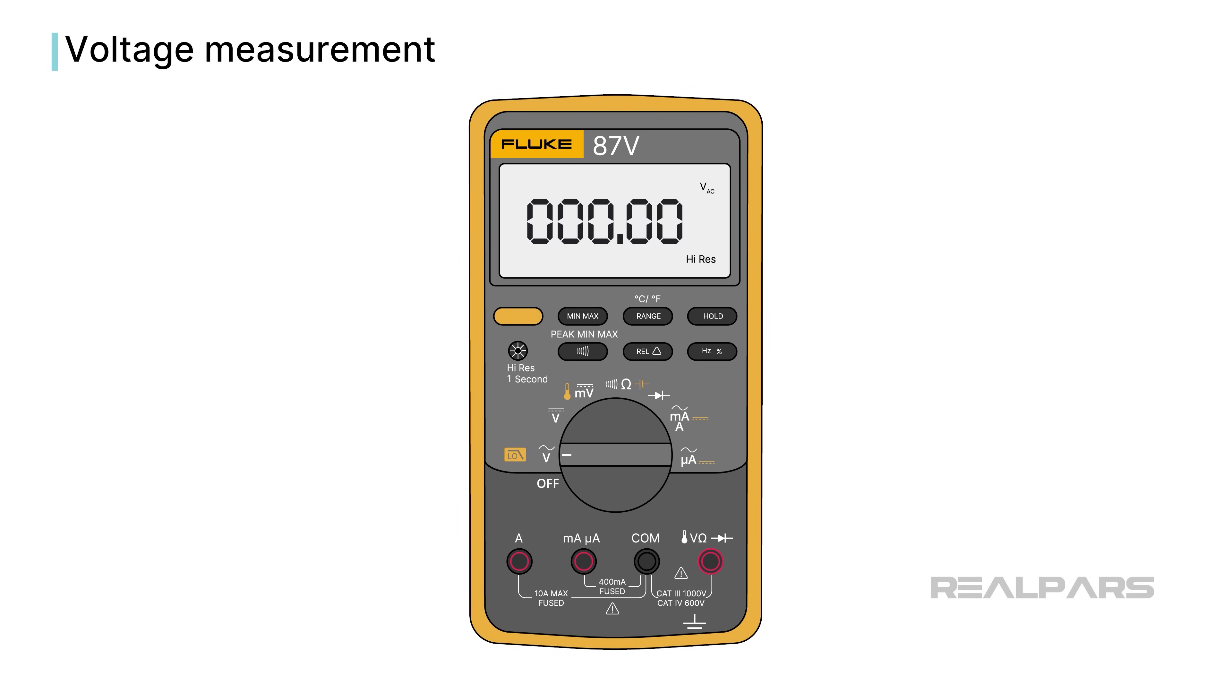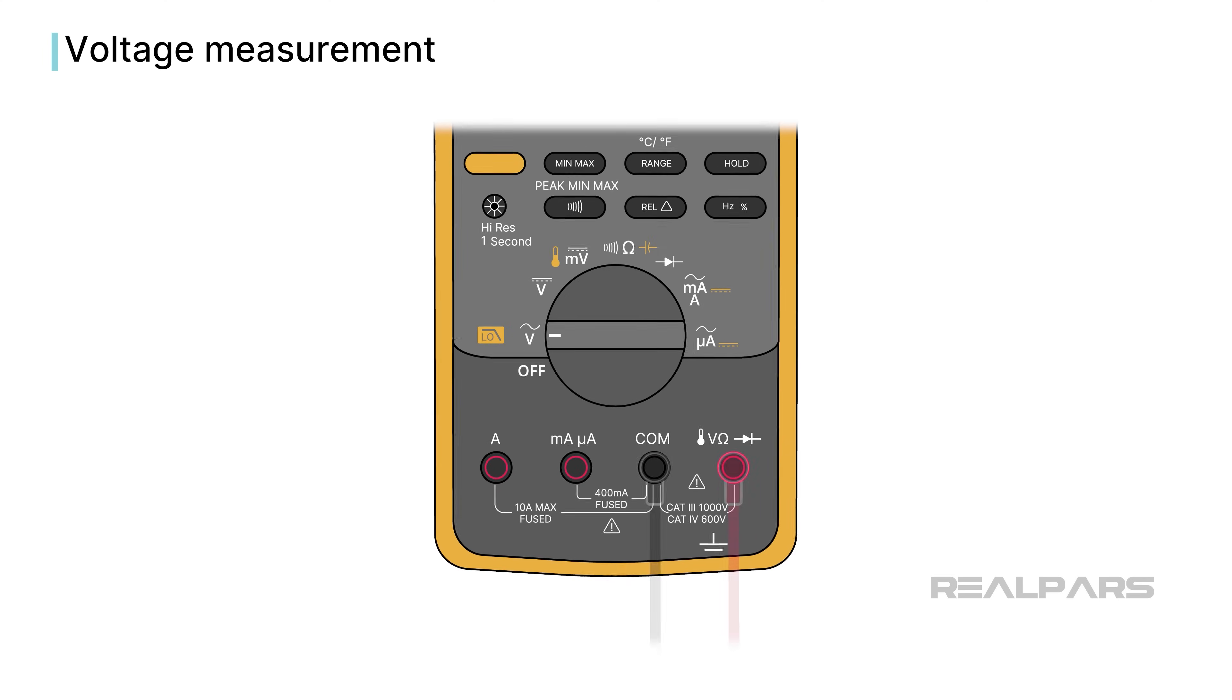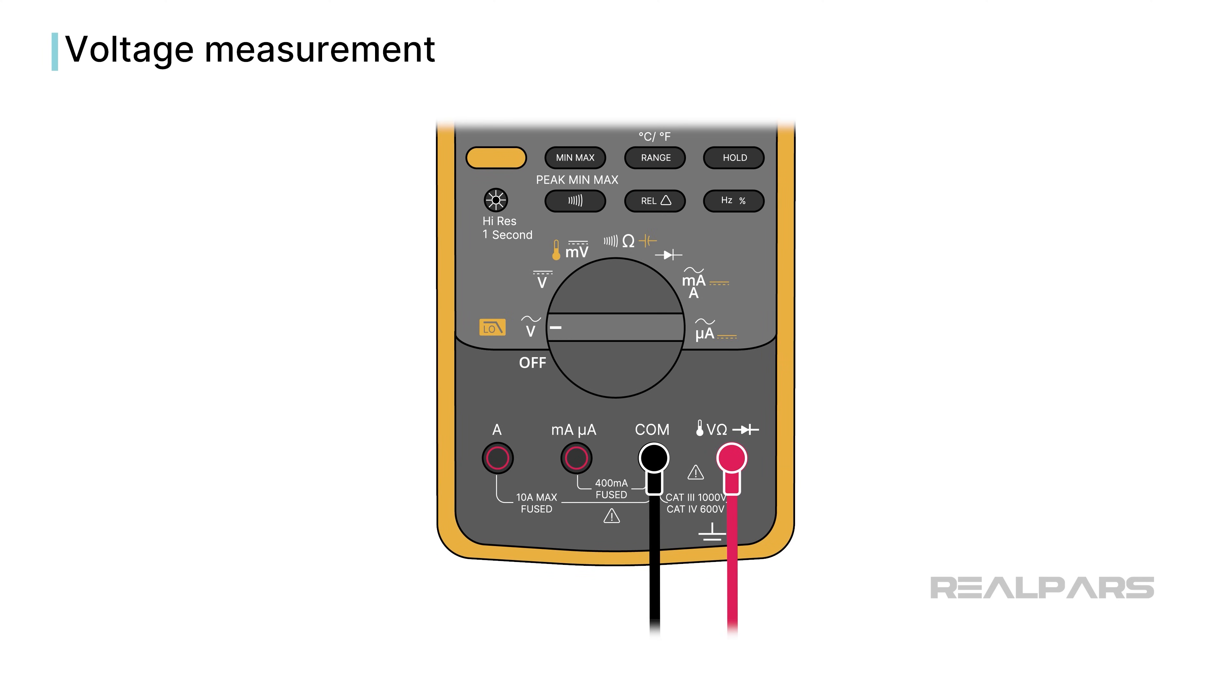Let's start with voltage measurements. The Fluke 87-5 measures AC and DC volts, plus DC millivolts, each selectable. A better measurement resolution is obtained by pushing the Range button. The measurement probes are inserted into the voltage and common jacks.